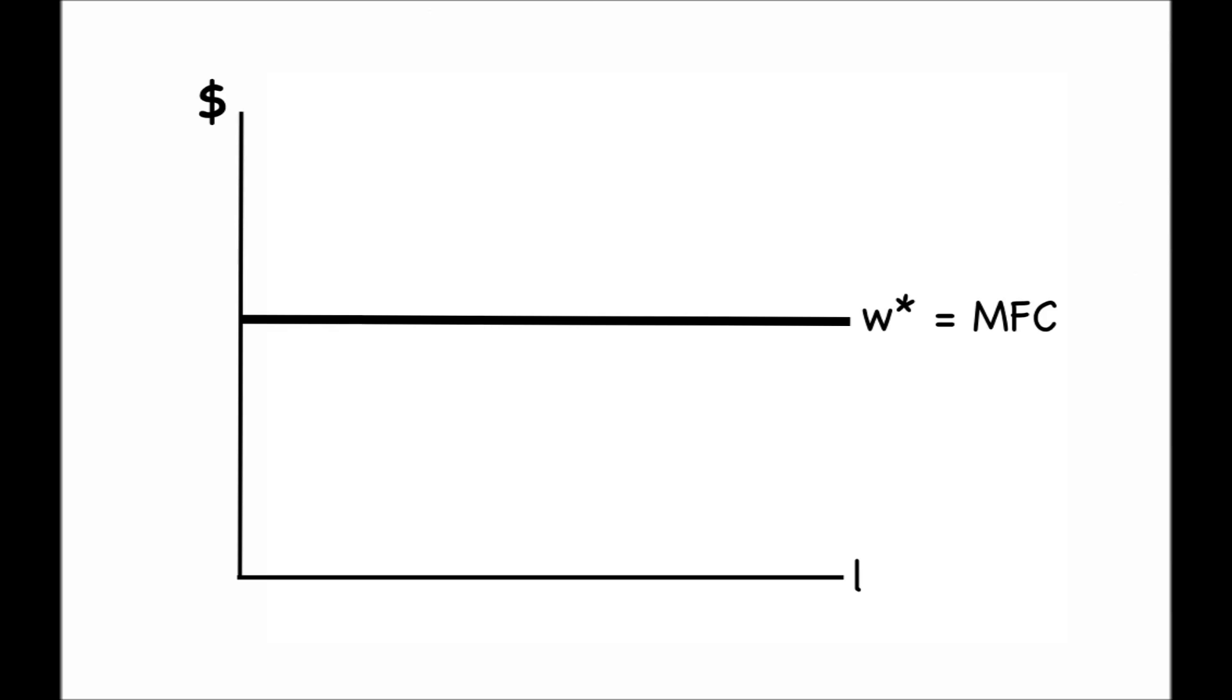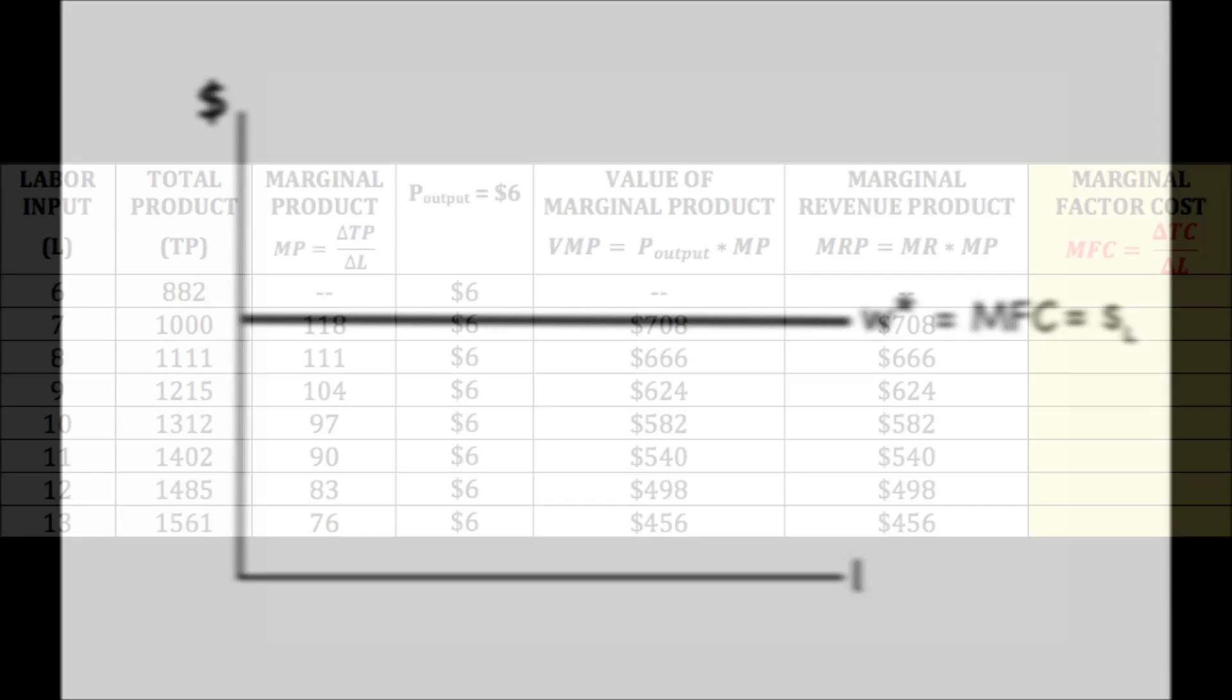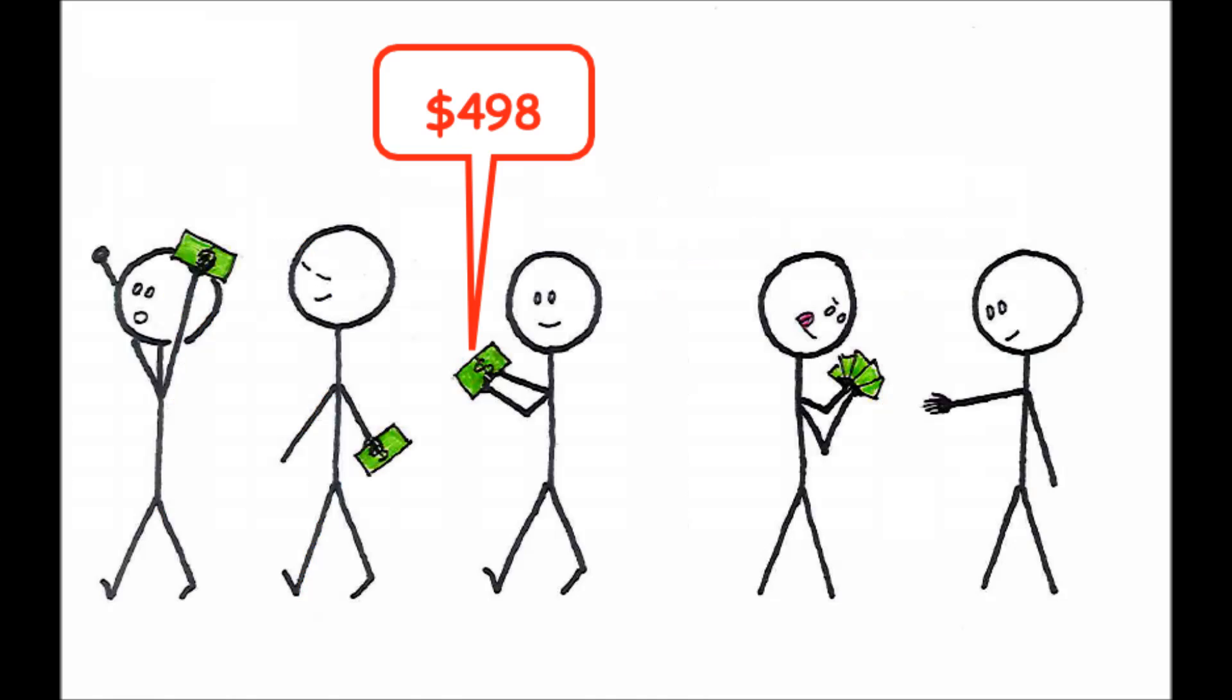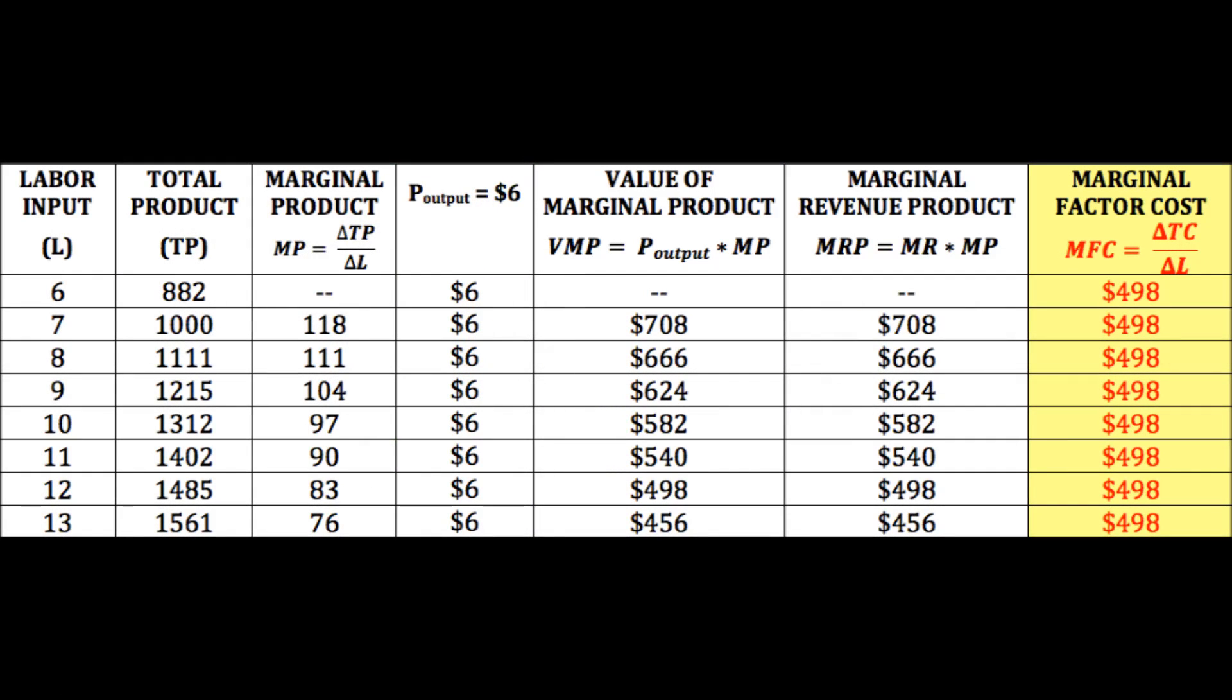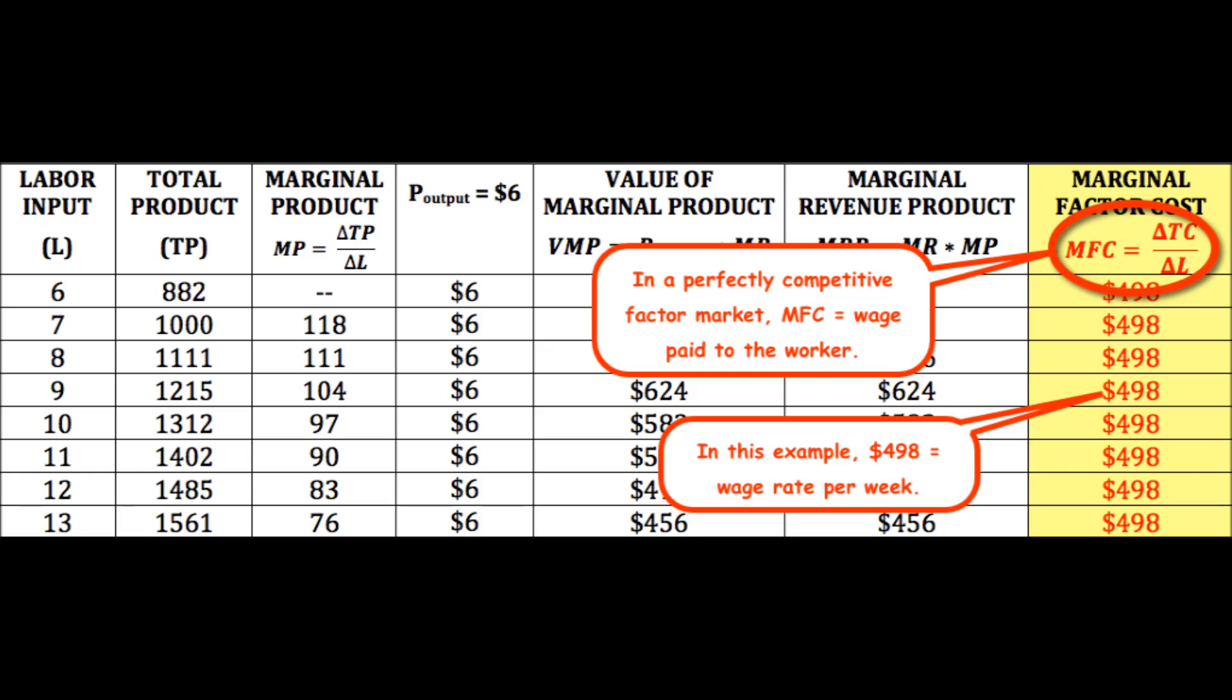As mentioned in the factor market overview, this line will also be the firm's supply of labor. So, let's add wage to the chart, say, $498 per week. No matter how many workers the firm hires, this will be the wage. Because the wage is constant, each and every worker hired will add the same dollar amount to the cost, $498. Thus, marginal factor cost is the same as the wage.